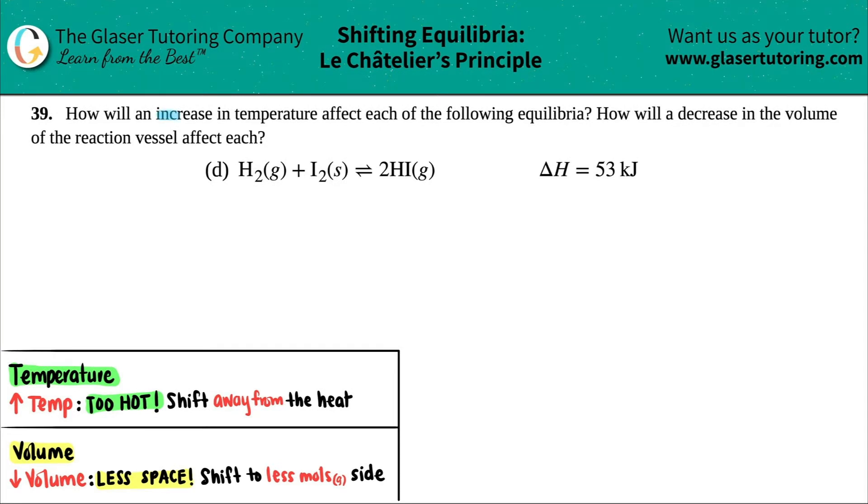Number 39. How will an increase in temperature affect each of the following equilibria? And then how will a decrease in the volume of the reaction vessel affect each? We have letter D out of this bunch.